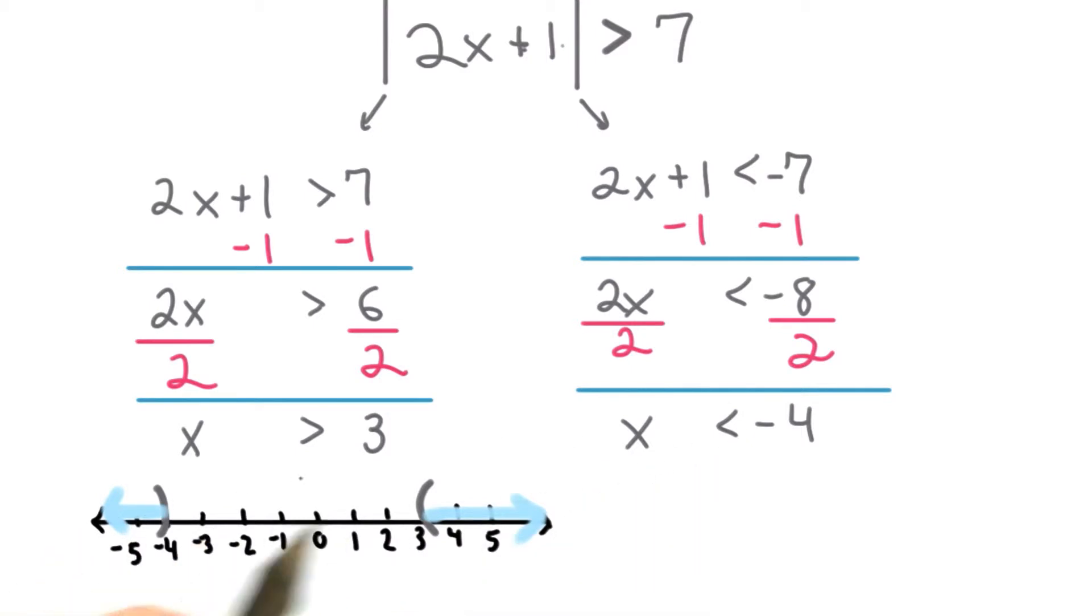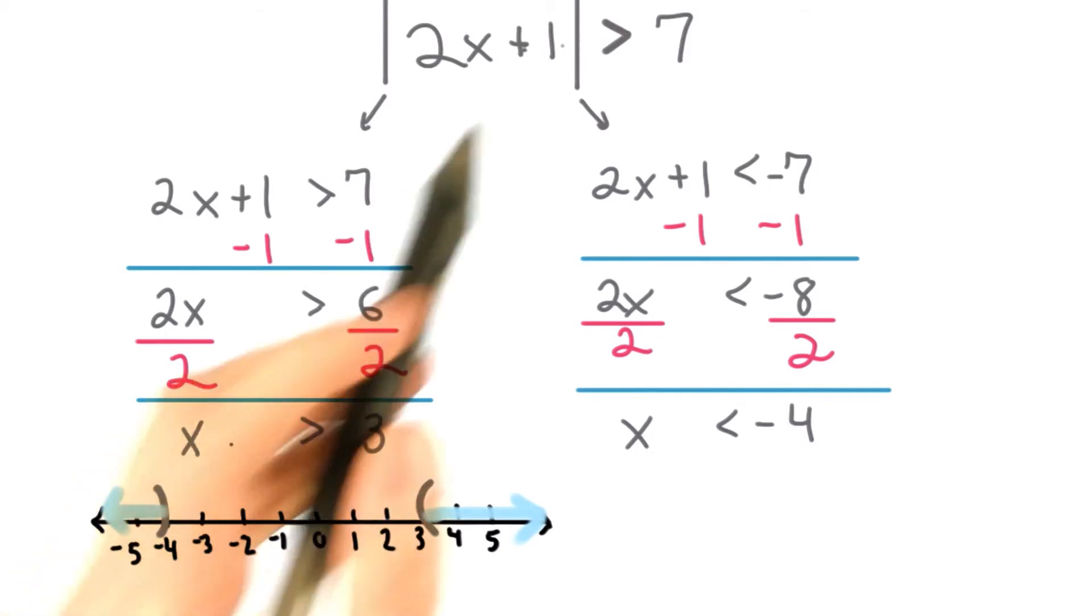Remember, any number in either region, this region or this region, will work for my inequality. If x is any value in here or any value in here, the condition is satisfied.